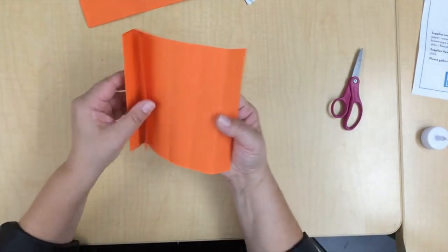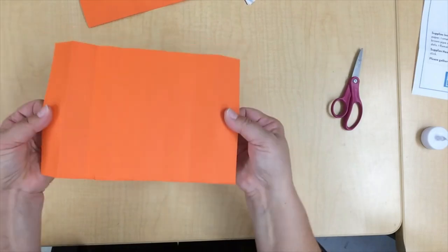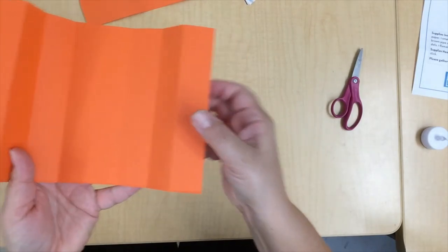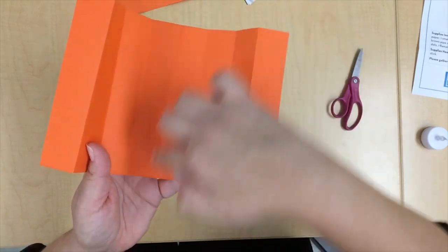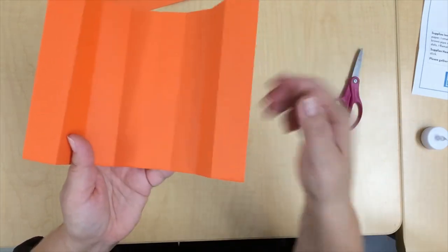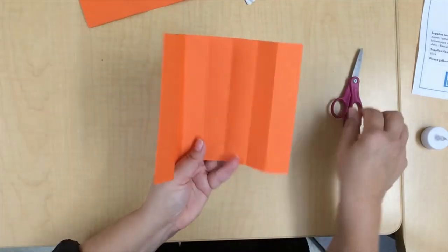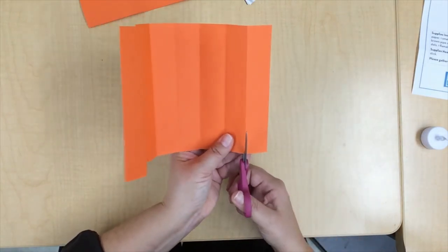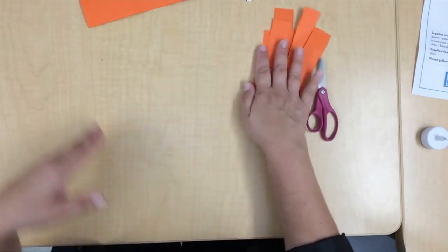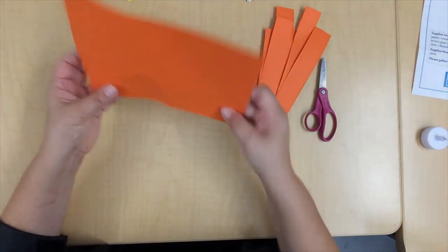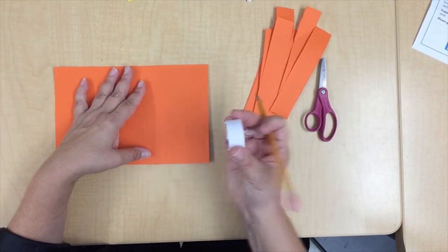Now you have lines to cut some strips. So cut along each of these lines so you will have eight strips when you're done cutting.